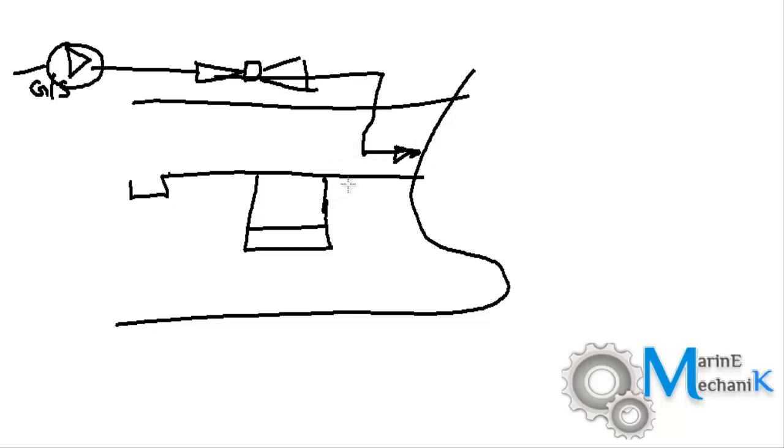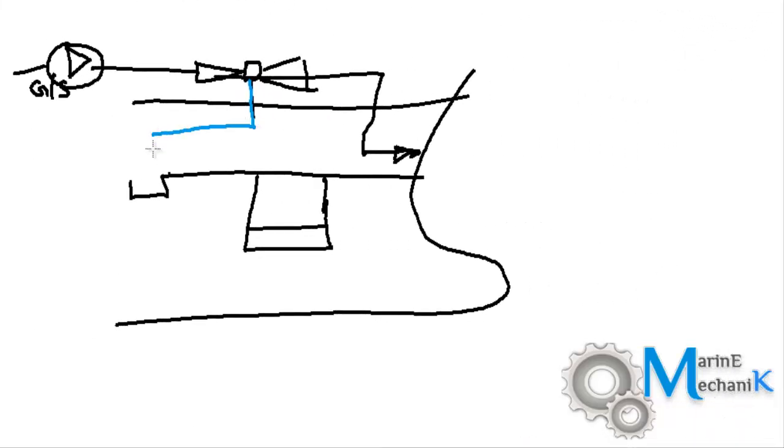It is going to have some separate overboard arrangement with a valve or along with the anchor wash. It varies depending upon the ship type. Now the throat of this eductor is going to get connected with these bilge wells—port and starboard—and also the bilge well for the chain locker, and each bilge well is going to have a valve so that it will be easy for isolation.